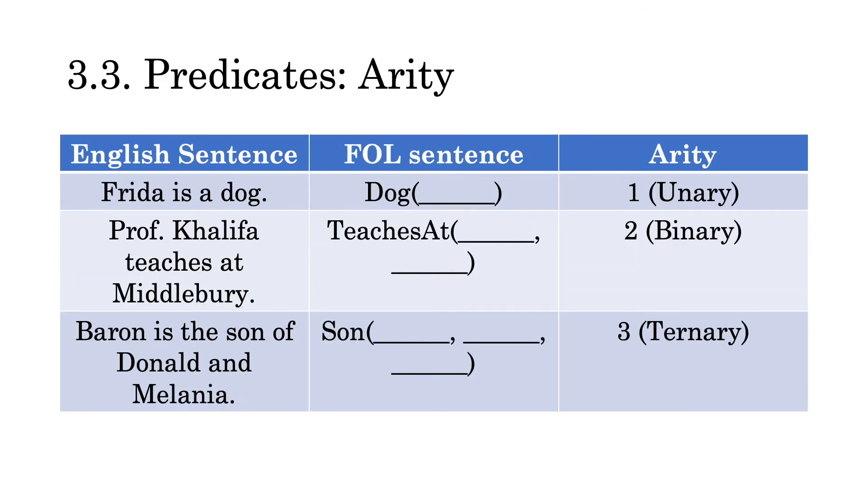Note that each example has a different number of blanks associated with it. Dog has one blank associated with it. Teaches at has two blanks associated with it. And son has three blanks associated with it. The number of blanks is what's called the arity of the predicate. Basically, the arity tells you the number of individual constants you need to plug in in order to convert the predicate into a well-formed sentence.